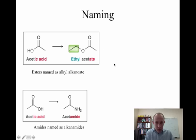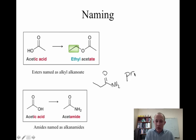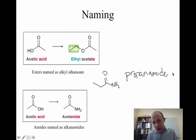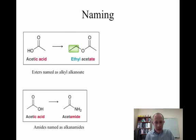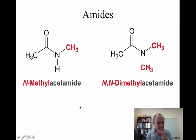Similarly, for an amide — like if we had a three-carbon amide — this would be called propanamide. So you drop the 'oic acid' and add the word 'amide.' I'm not going to make you name these things, but it might be useful to recognize the names, especially for esters. The thing that's confusing about amides is that we can have different alkyl groups on the nitrogen, so we name those as N-methylacetamide, meaning we have a methyl group on the nitrogen, or N,N-dimethylacetamide, etc.